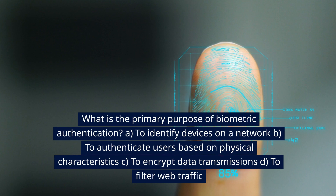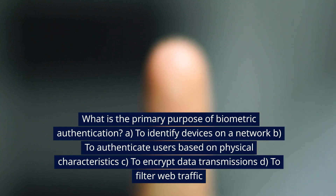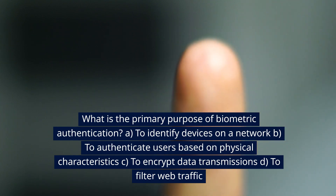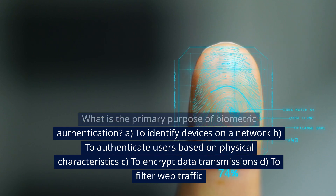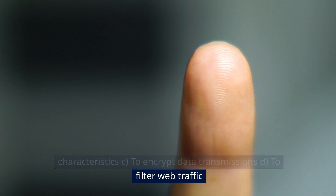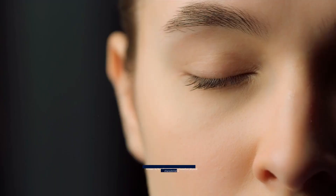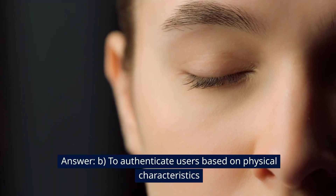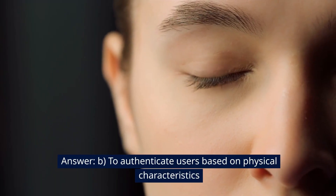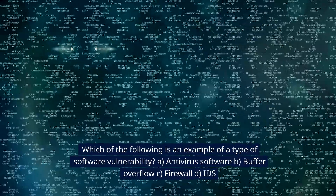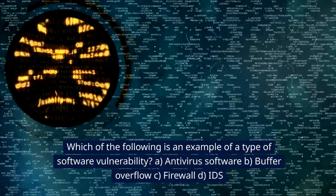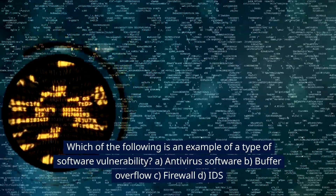What is the primary purpose of biometric authentication? A. To identify devices on a network. B. To authenticate users based on physical characteristics. C. To encrypt data transmissions. D. To filter web traffic. Answer: B. To authenticate users based on physical characteristics.